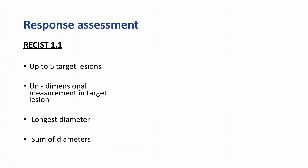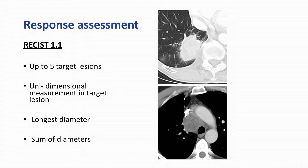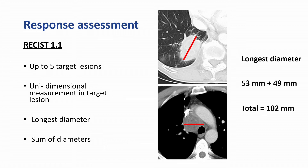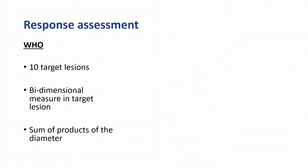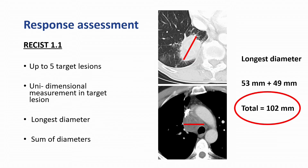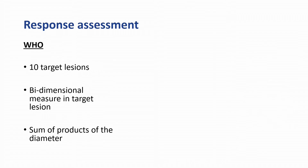As you are all very familiar with, we have several formal ways of assessing treatment response. The most frequently used one being RECIST 1.1. Using RECIST, we select up to five target lesions, perform a unidimensional measurement in each lesion, and add them all together to get a total tumor burden, which we then track over time to see if it gets better or worse. The WHO criteria are an older version of RECIST — I mention them only because some of the immune-related response criteria I'll discuss were based off of WHO.